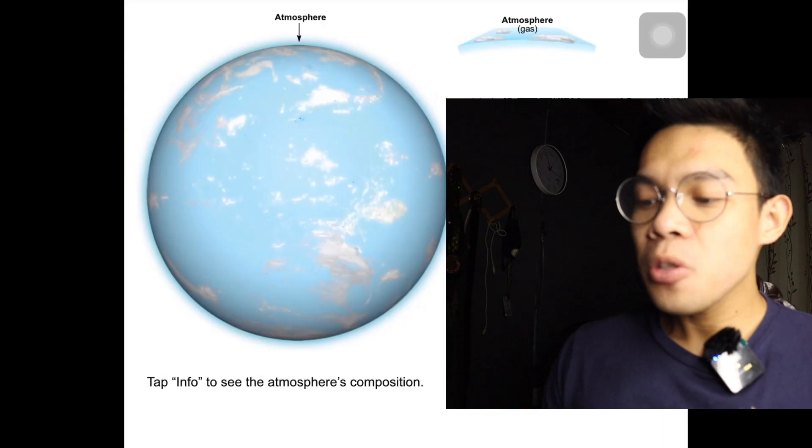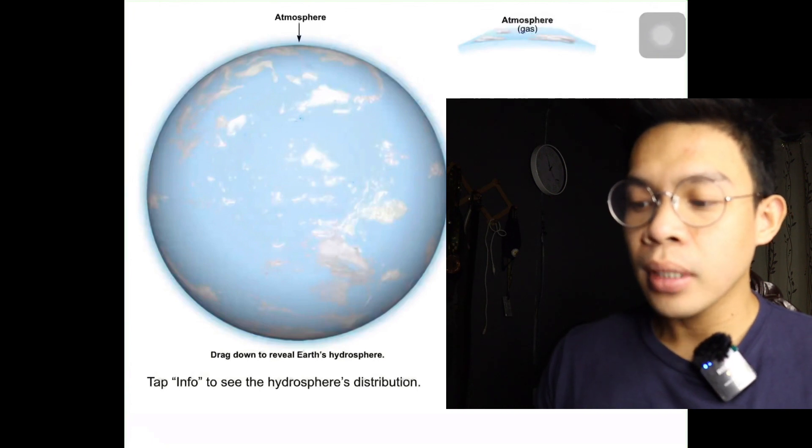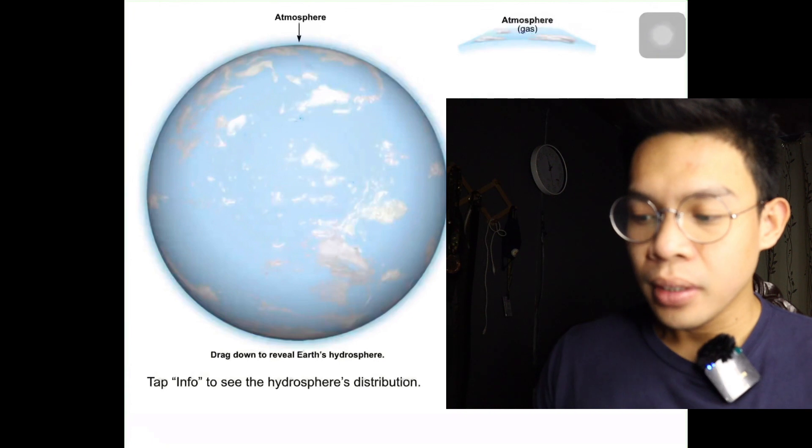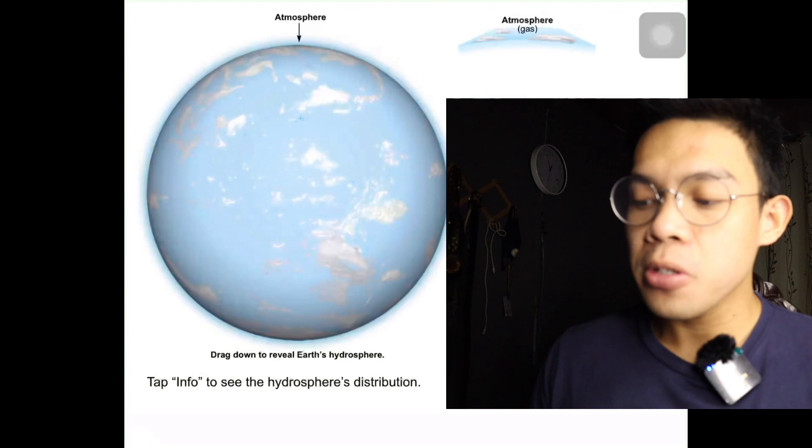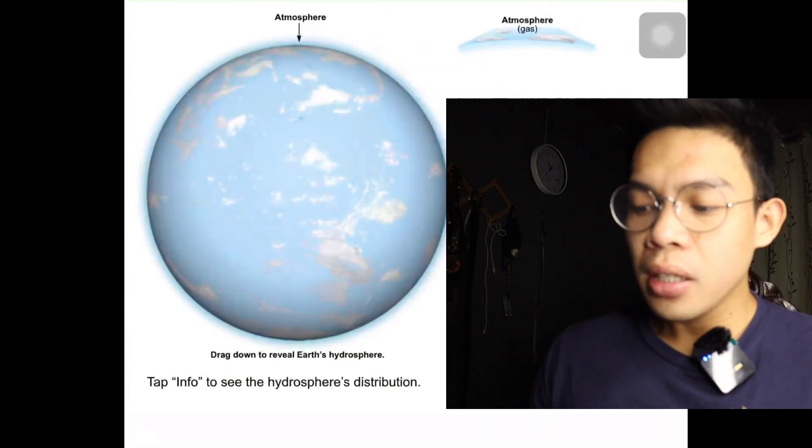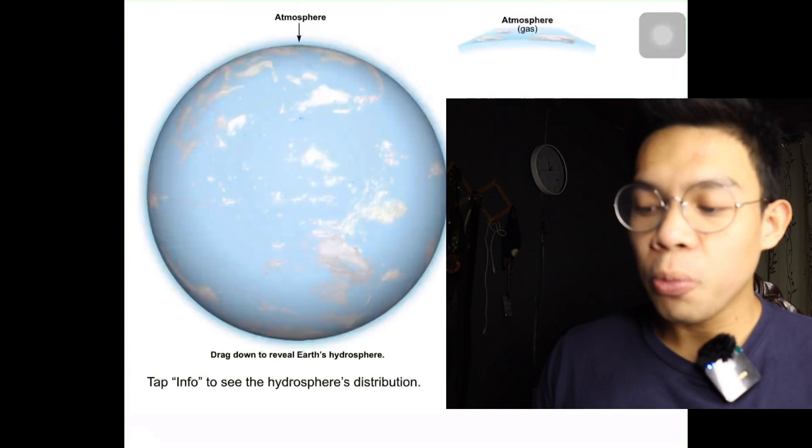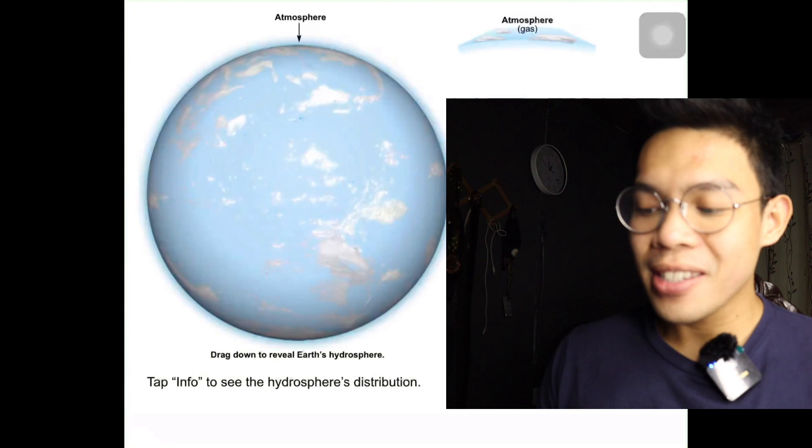The hydrosphere is the combined amount of water found above, on, or in our planet. The hydrosphere is constantly changing: it moves from the atmosphere to the Earth's surface, flows to the oceans, and evaporates back into the air. It is also absorbed underground. The majority of water is found in the oceans, but it is also found in lakes, streams, glaciers, and groundwater.